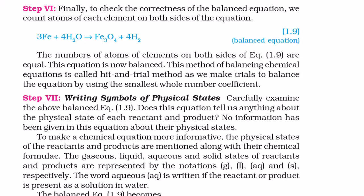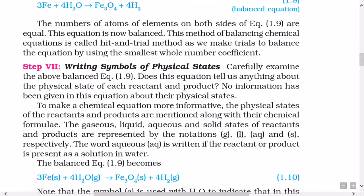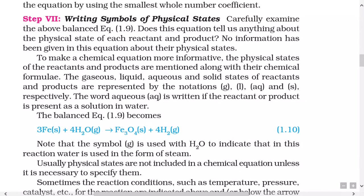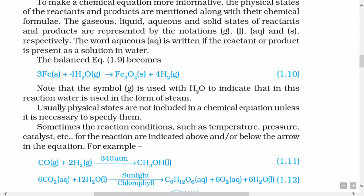Step 7: Writing symbols of physical states. Carefully examine the above balanced equation 1.9. Does this equation tell us anything about the physical state of each reactant and product? No information has been given in this equation about their physical states. To make a chemical equation more informative, the physical states of the reactants and products are mentioned along with their chemical formulae. The gaseous, liquid, aqueous, and solid states of the reactants and products are represented by the notations (g), (l), (aq), and (s) respectively. The word aqueous is written if the reactant or product is present as a solution in water. The balanced equation 1.9 becomes 3Fe(s) plus 4H2O(g) gives Fe3O4(s) plus 4H2(g).